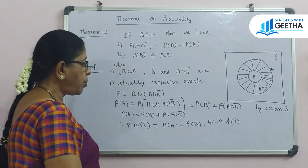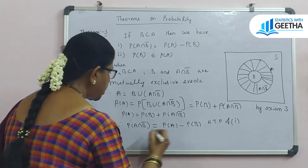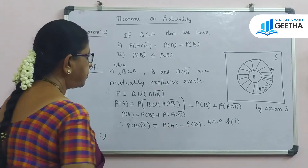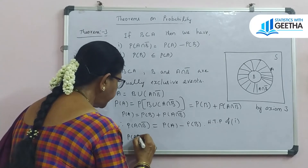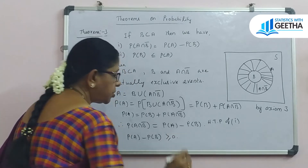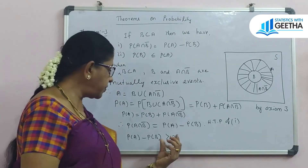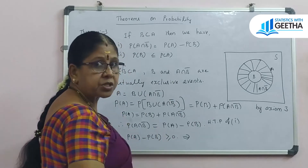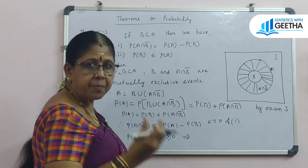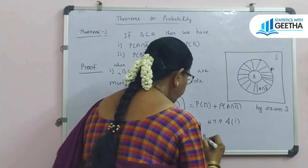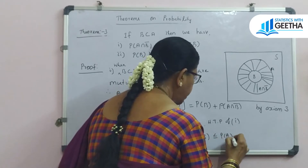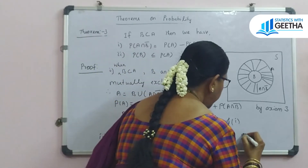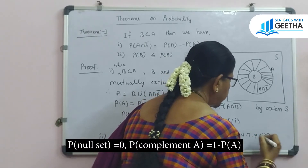Now, to prove that P(B) ≤ P(A): we have P(A ∩ B') equals P(A) minus P(B). Since P(A ∩ B') is a probability, it is greater than or equal to zero by definition — probability must be a positive quantity. This implies P(A) minus P(B) ≥ 0, which automatically implies P(B) is less than or equal to P(A). Hence the proof of 2.